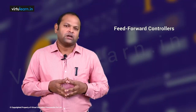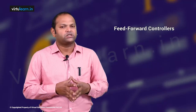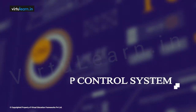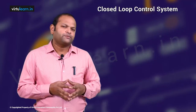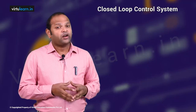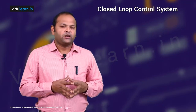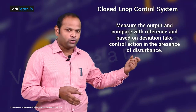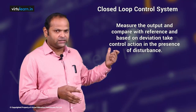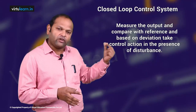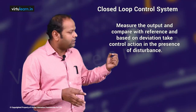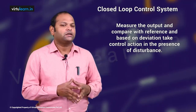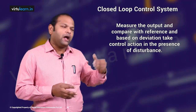The counterpart is the closed loop control system. We know the problem with open loop control, especially when there is disturbance or a changing input. The solution is to measure the output, compare it with the reference, and find the deviation. Depending on the magnitude, direction, and polarity of the deviation, we design the controller to work in the presence of disturbance.